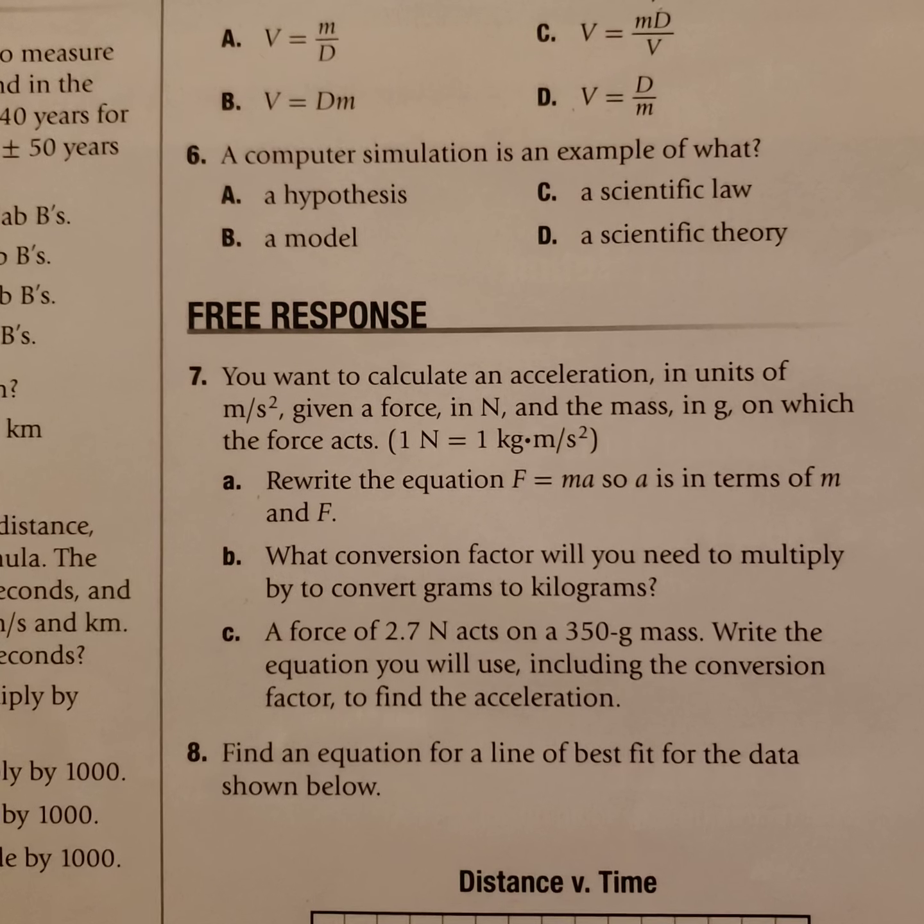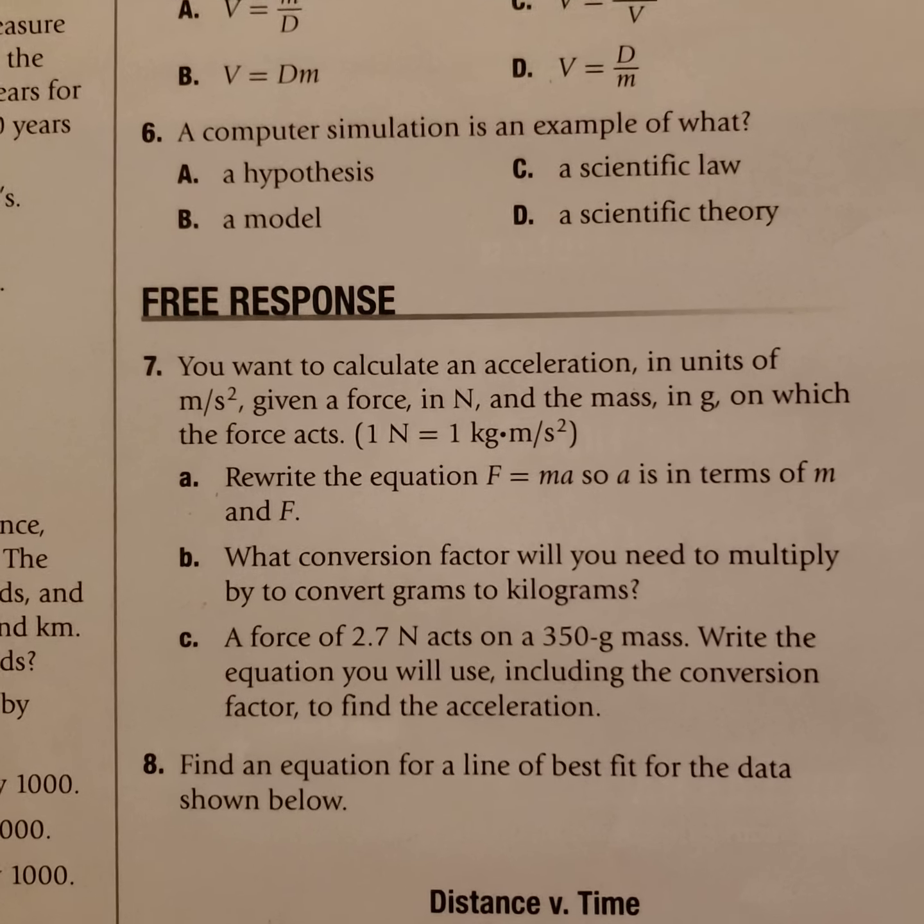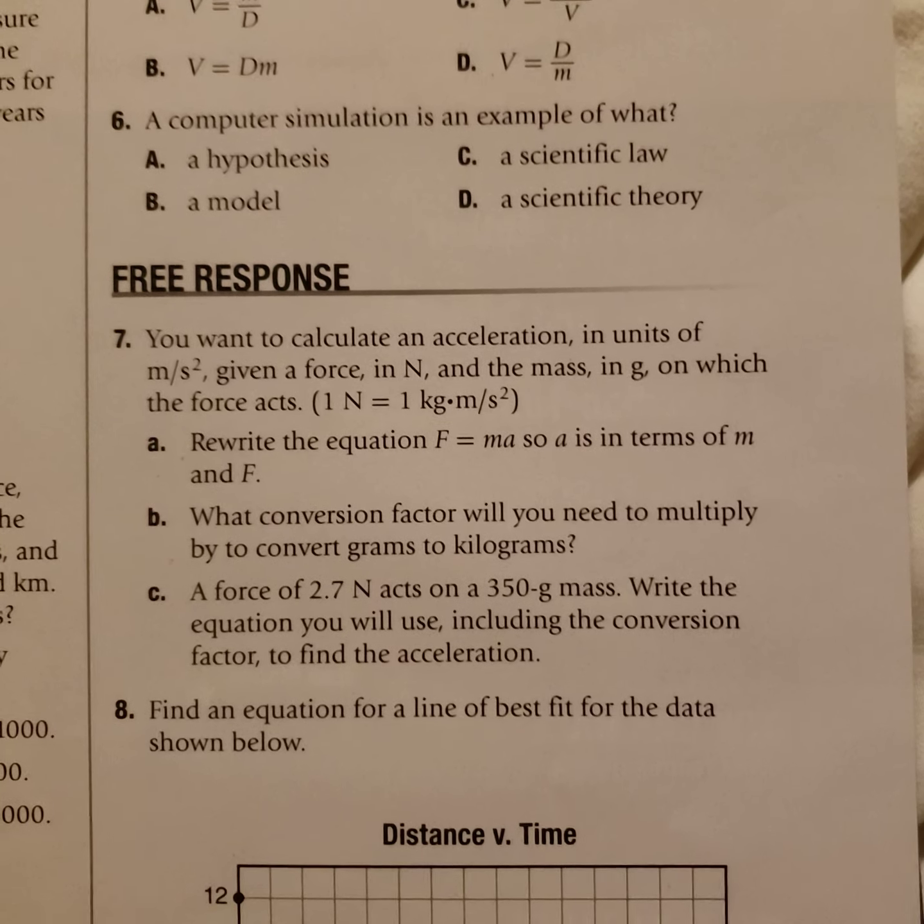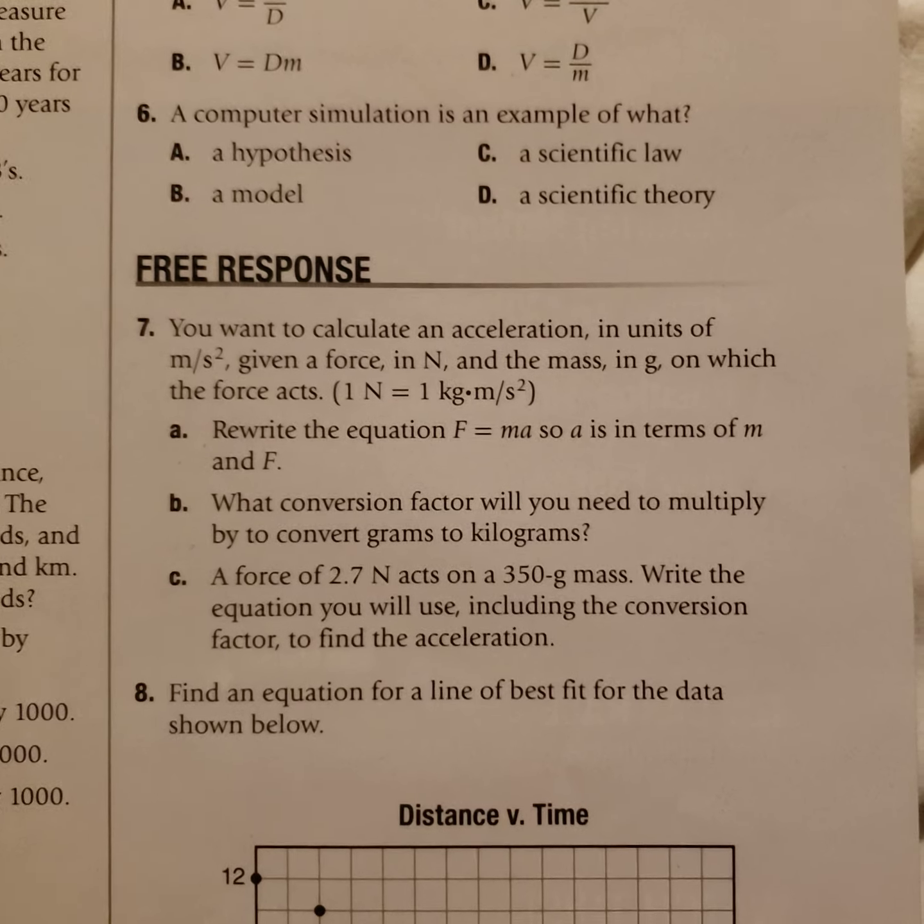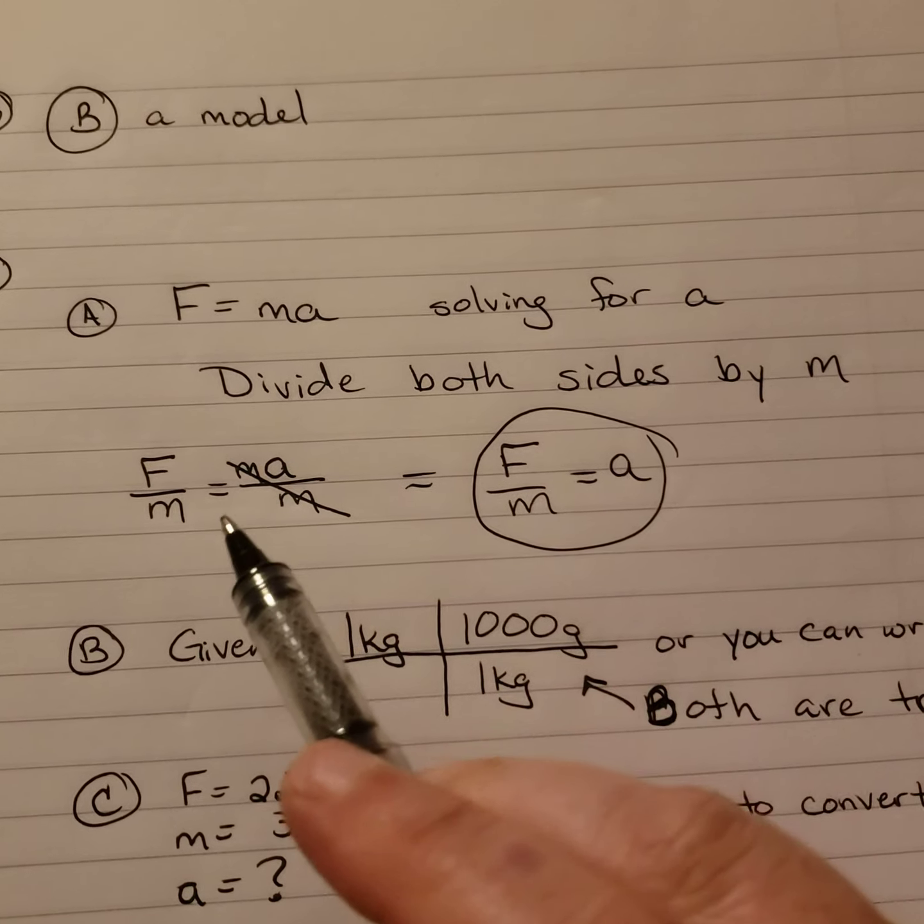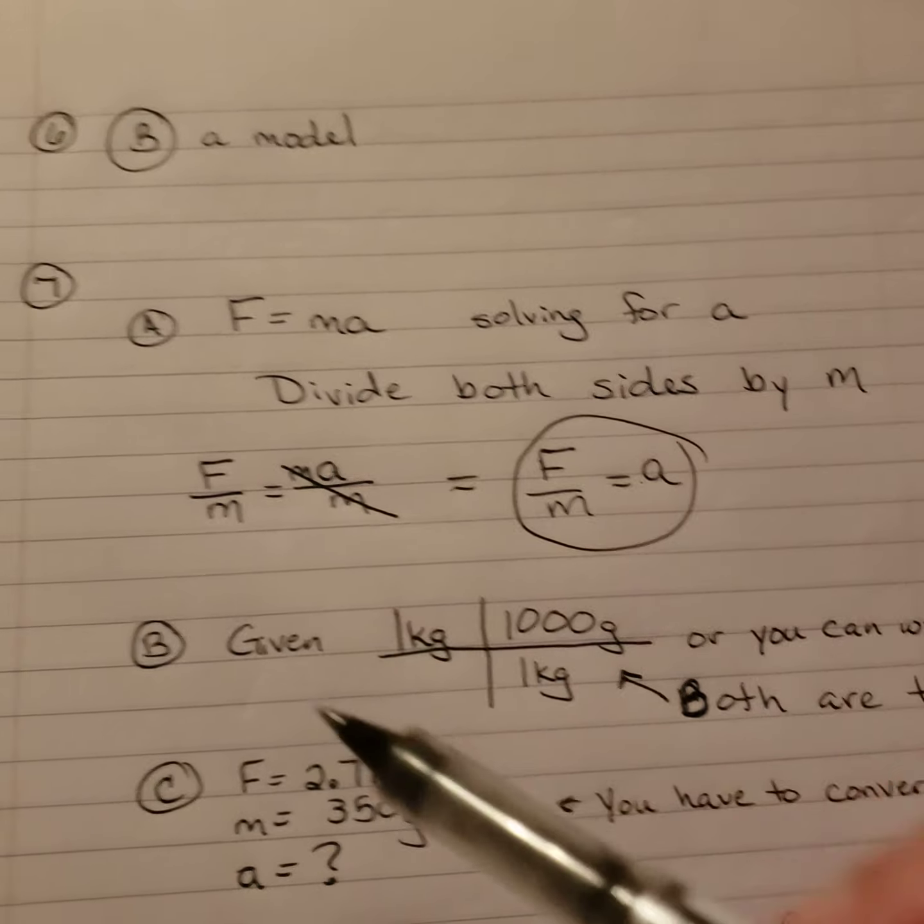You want to calculate an acceleration in units of meters per second squared, given a force in newtons and the mass in grams, on which the force acts. 1 newton equals 1 kilogram meter per second squared. First, they want us to rewrite the equation F equals ma in terms of a. Let's rewrite it to get acceleration first. I'm going to divide both sides by m, which will give me, then I can cancel that out, and F divided by m, because we have to do the same thing to both sides. And that gives me F over m equals a. Perfect. Part A is done.